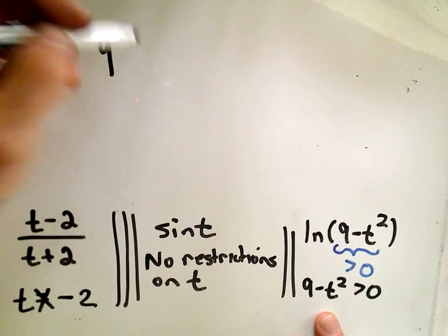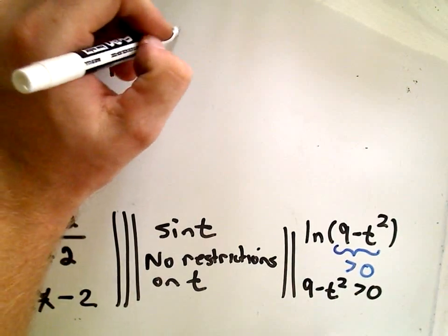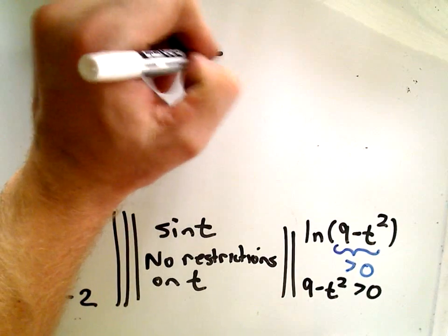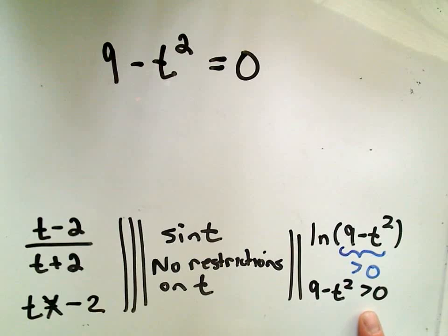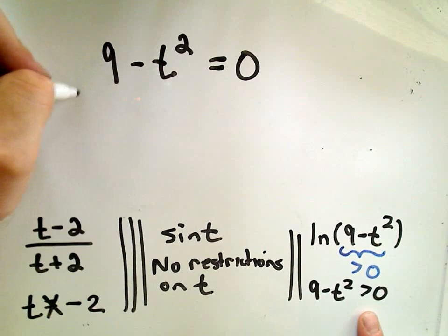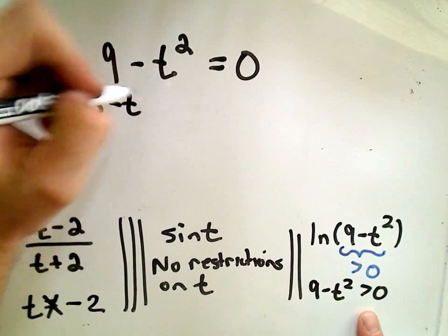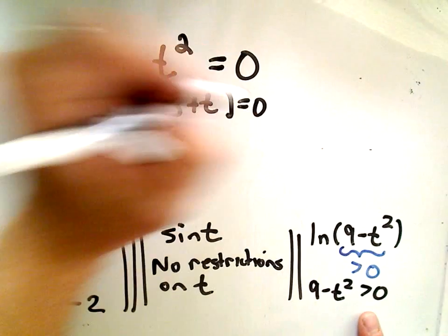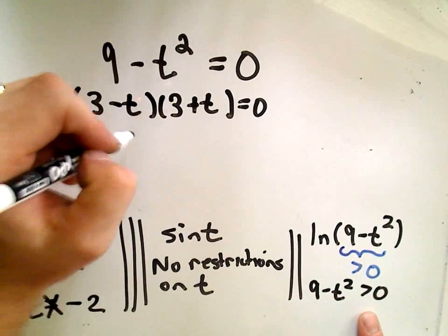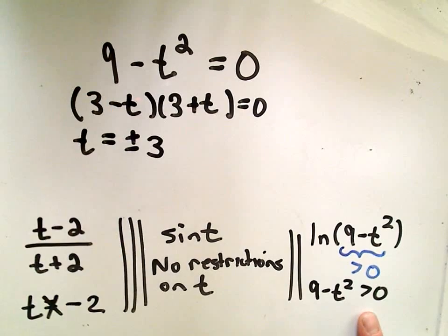So for 9-t², if you've forgotten quadratic inequalities, I've got a bunch of videos on those as well. I'm gonna solve the corresponding equation 9-t² equals 0. Well that simply factors as (3-t)(3+t) equals 0. So the solutions to this will be t equals positive and negative 3.